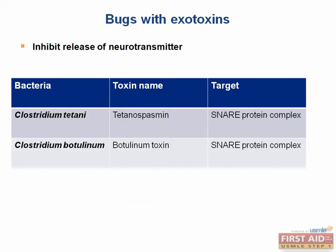Clostridium tetani produces the tetanospasmin toxin. This toxin cleaves the SNARE protein complex required for neurotransmitter release. The neurotransmitters blocked are GABA and glycine, both inhibitory neurotransmitters. Their absence causes spasms and tetany seen in tetanus — without inhibition of motor impulses, unopposed muscle contraction and spasm occur.